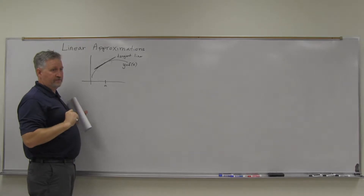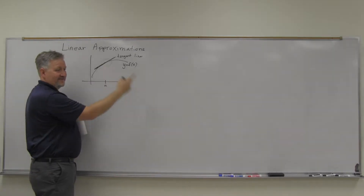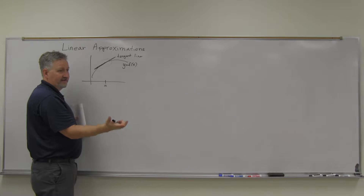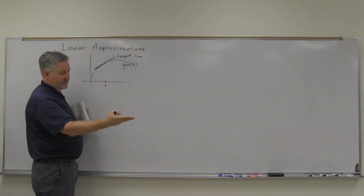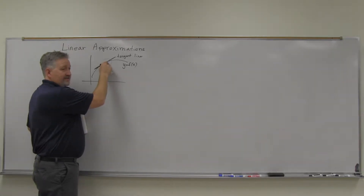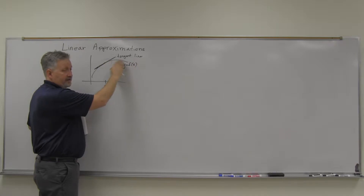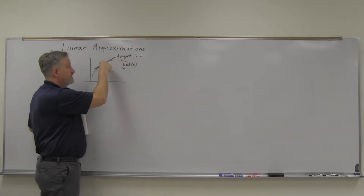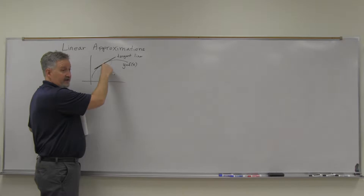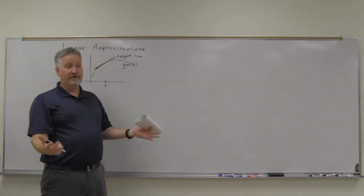Technically it touches it in one point, but if you graph this on a graphing calculator and zoom in, those two things — the tangent line and the curve — are nearly indistinguishable. Now, if we're not on a, obviously the curve's way off of the tangent line. But near a, the curve and the tangent line, they're one and the same.